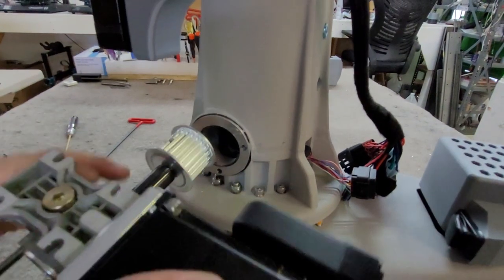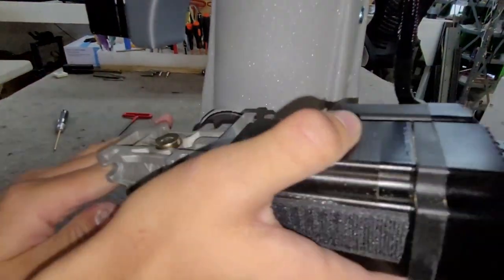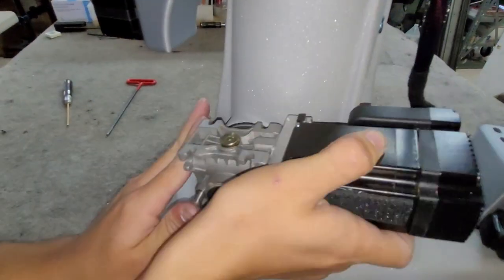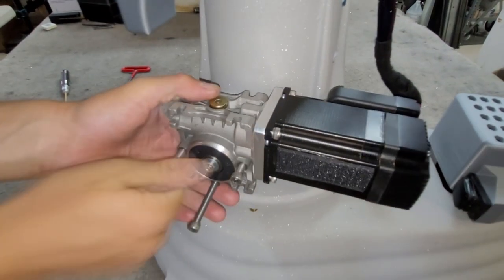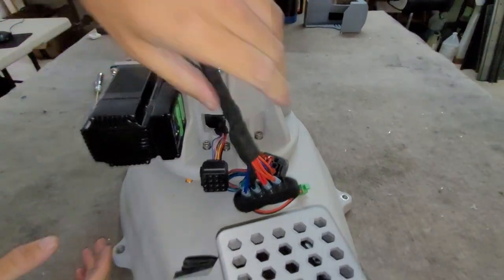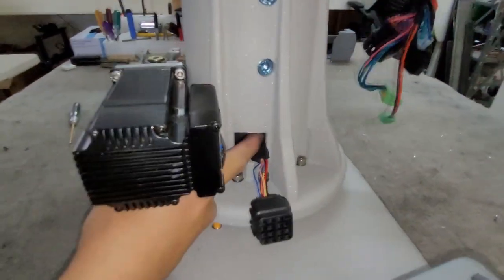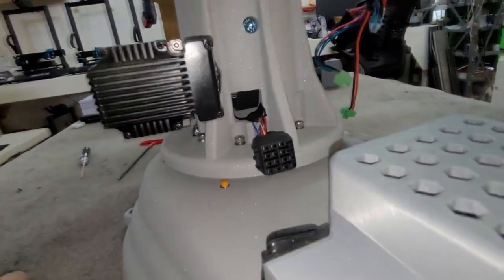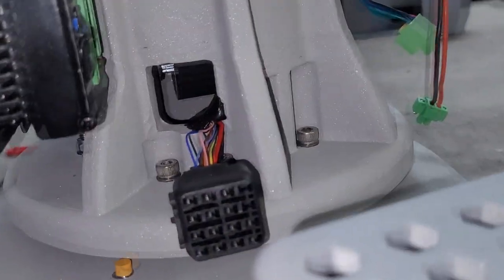We are going to insert the Z-gearbox and ensure that the belt goes around the pulley. You can check to see if the belt is on the pulley correctly through the wire port on the back side of the tower.